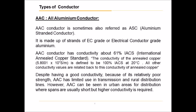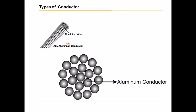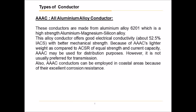Despite having good conductivity, because of its relatively poor strength, AAC has limited use in transmission and rural distribution lines. However, AAC can be seen in urban areas for distribution where spans are usually short but higher conductivity is required. The picture shows an example of AAC conductor.